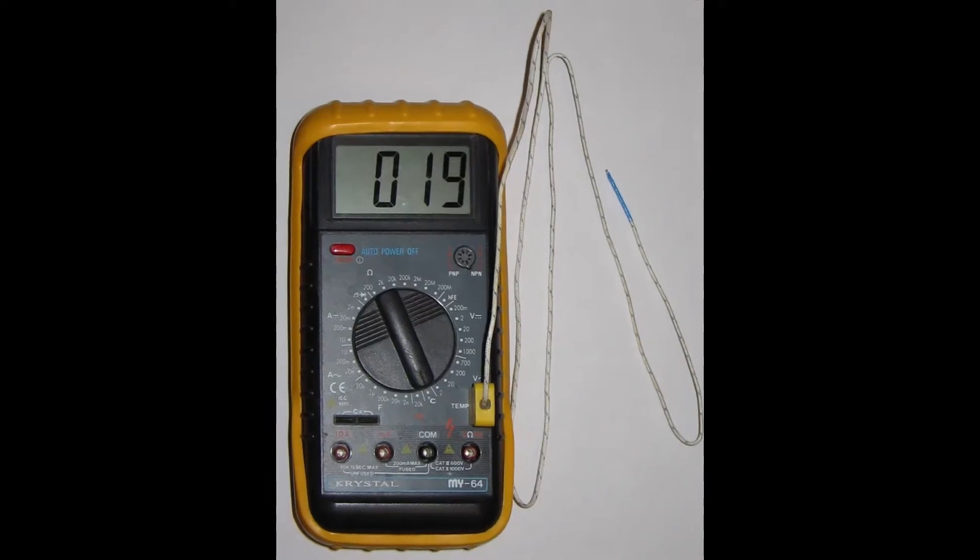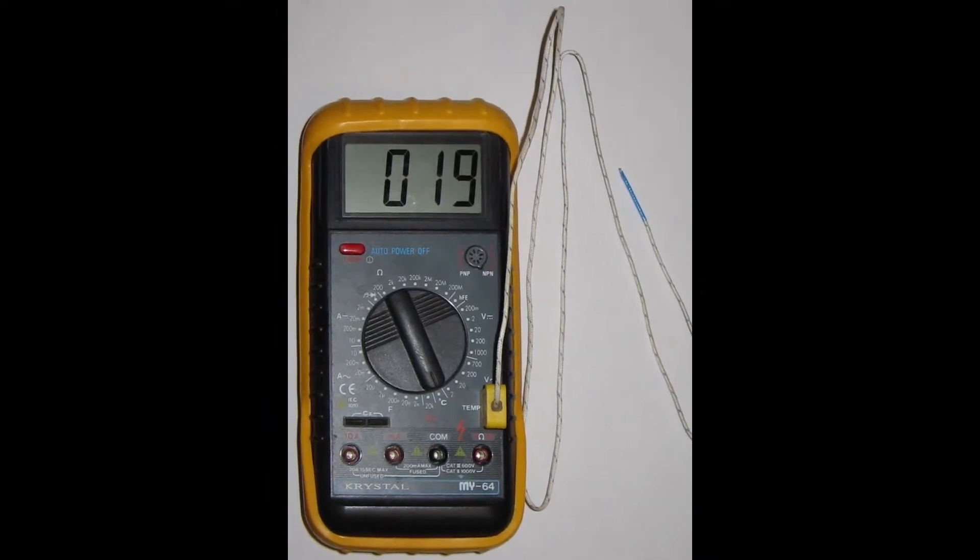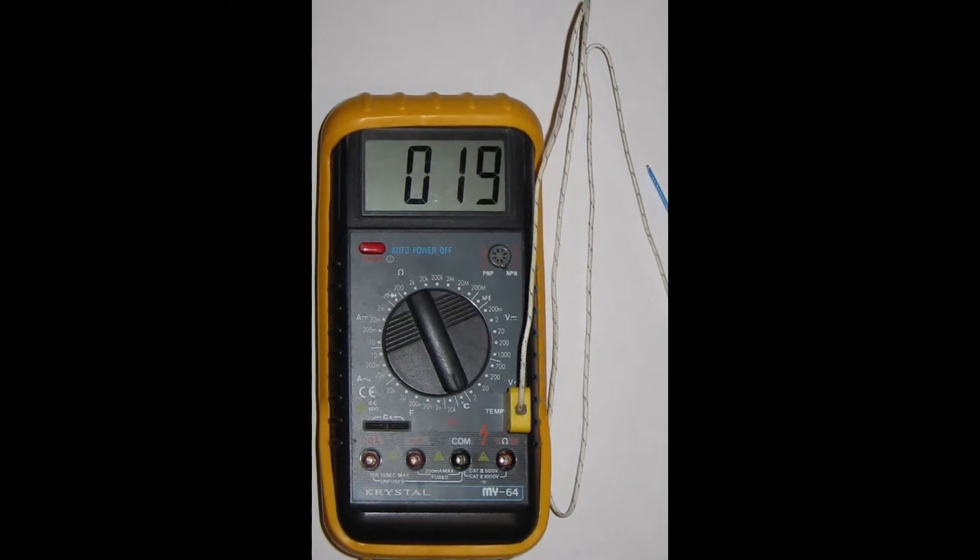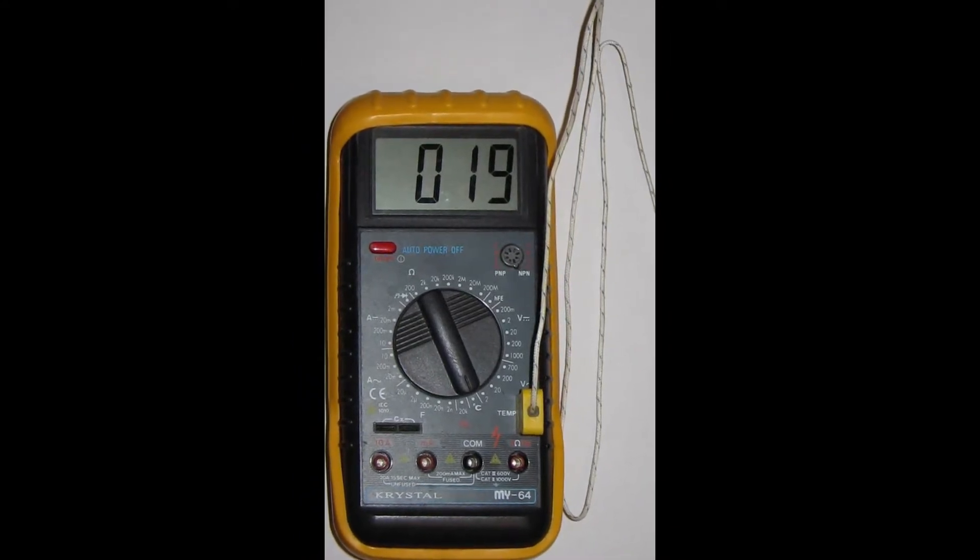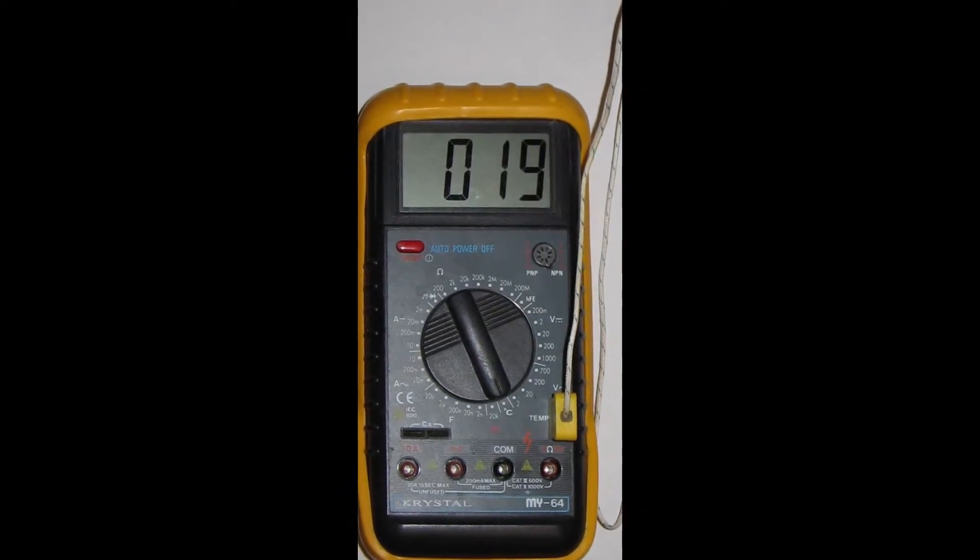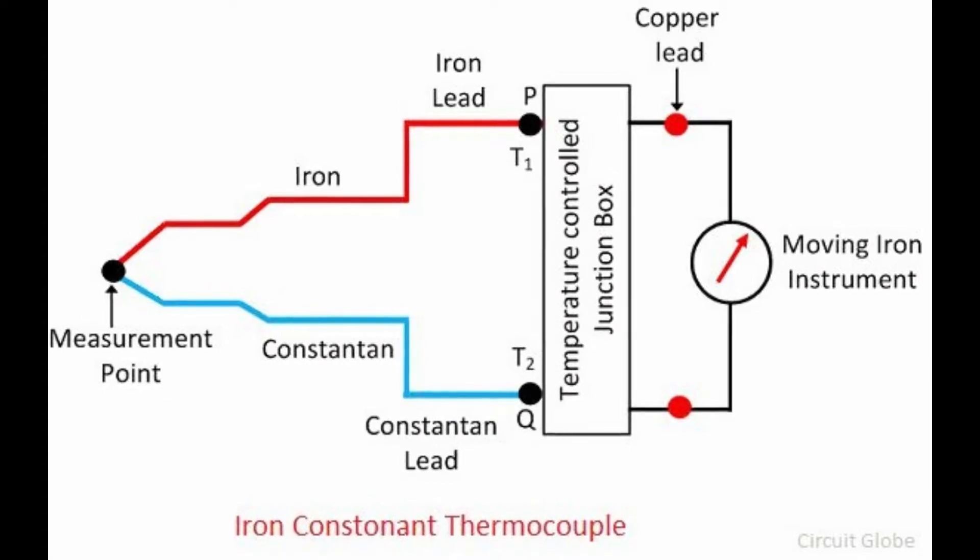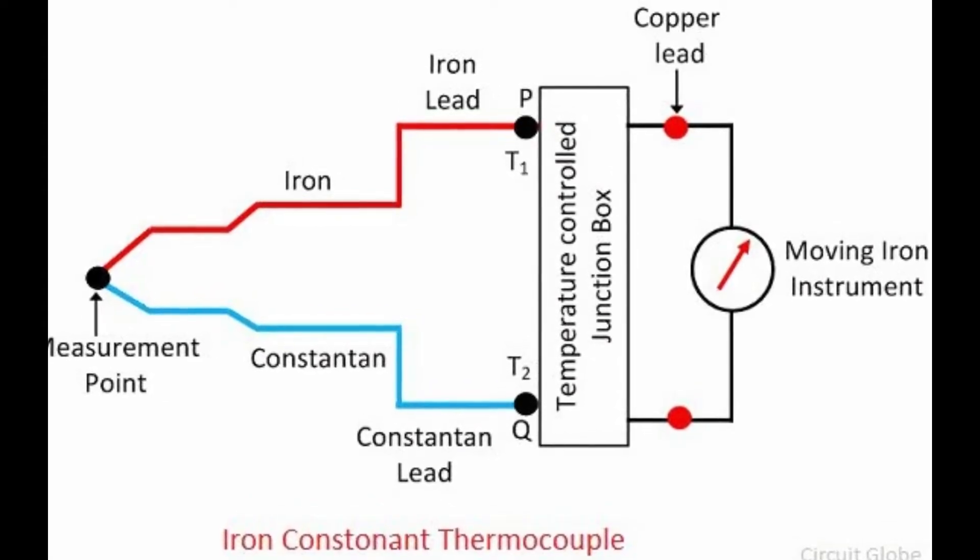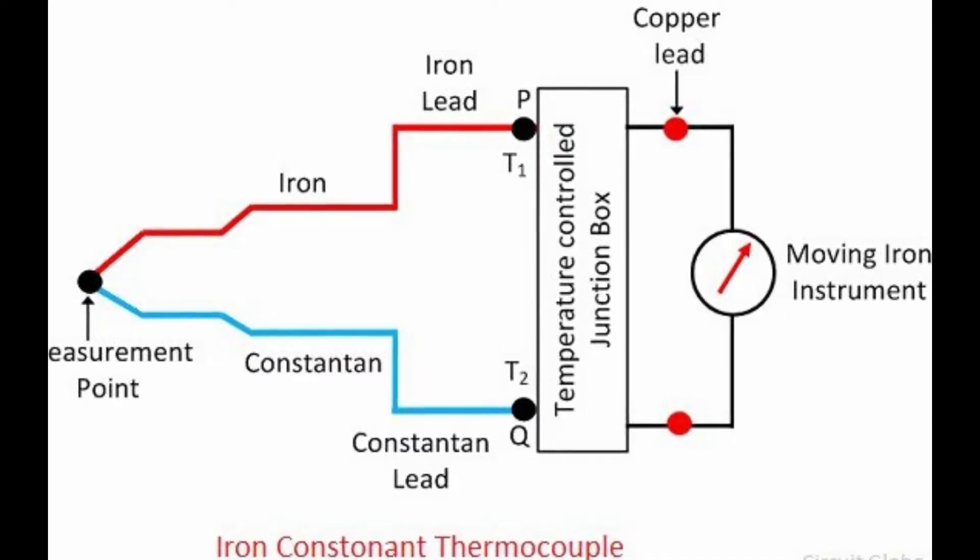In 1821, the German physicist Thomas Johann Seebeck discovered that when different metals are joined at the ends and there is a temperature difference between the joints, a magnetic field is observed. At the time, Seebeck referred to this consequence as thermomagnetism. The magnetic field he observed was later shown to be due to thermoelectric current.